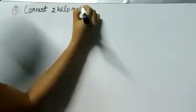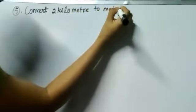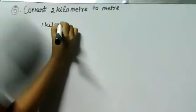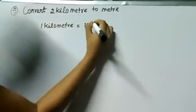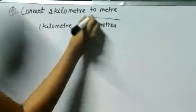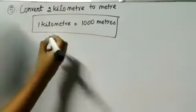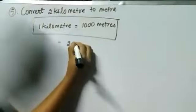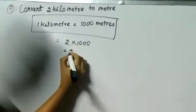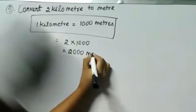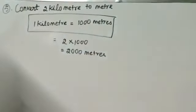Next, convert 2 kilometers to meters. Since conversion of kilometers to meters is a multiple, you multiply the value. So 2 multiplied by 1000 gives 2000 meters — 2 followed by 3 zeros. This is the conversion of kilometers to meters.